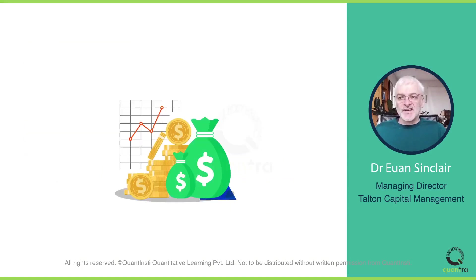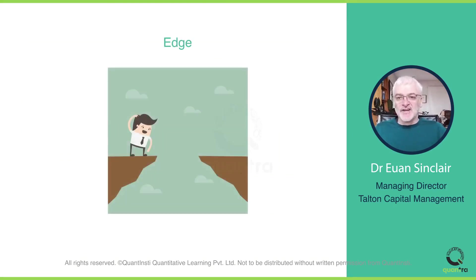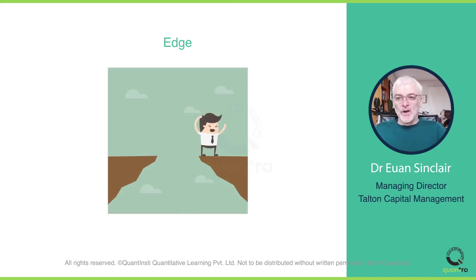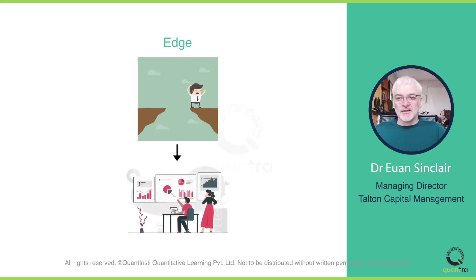Being successful in options trading is all about having an edge, or in other words, some advantage at the time of making a bet. Edge gives you a reason to expect to win in the long run. To have an edge, you need to gain some predictability of the market, and volatility trading is exactly that.